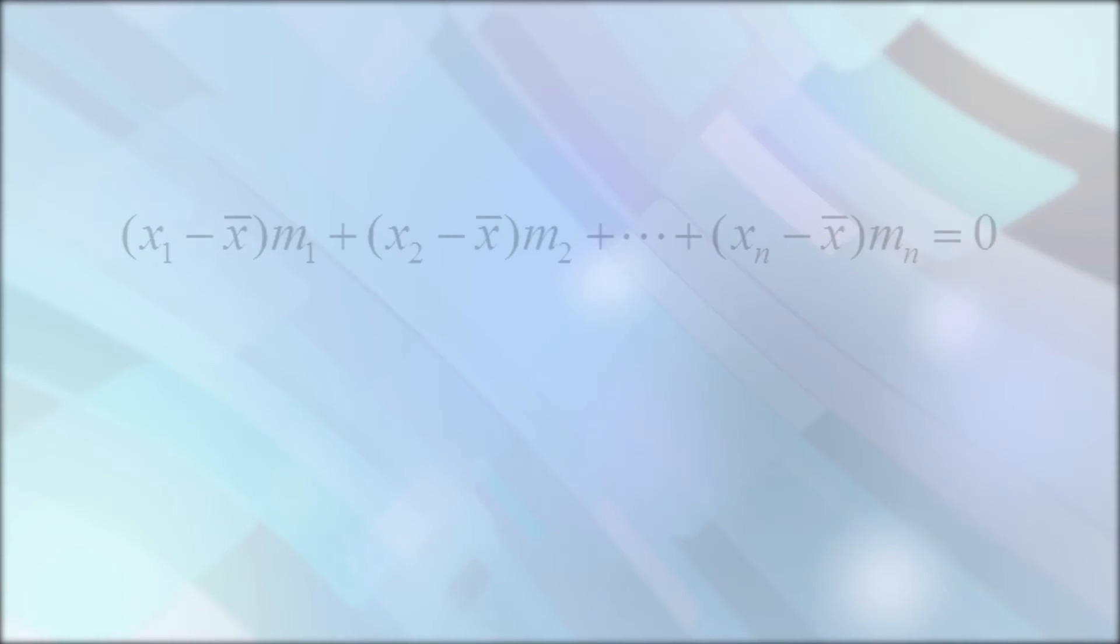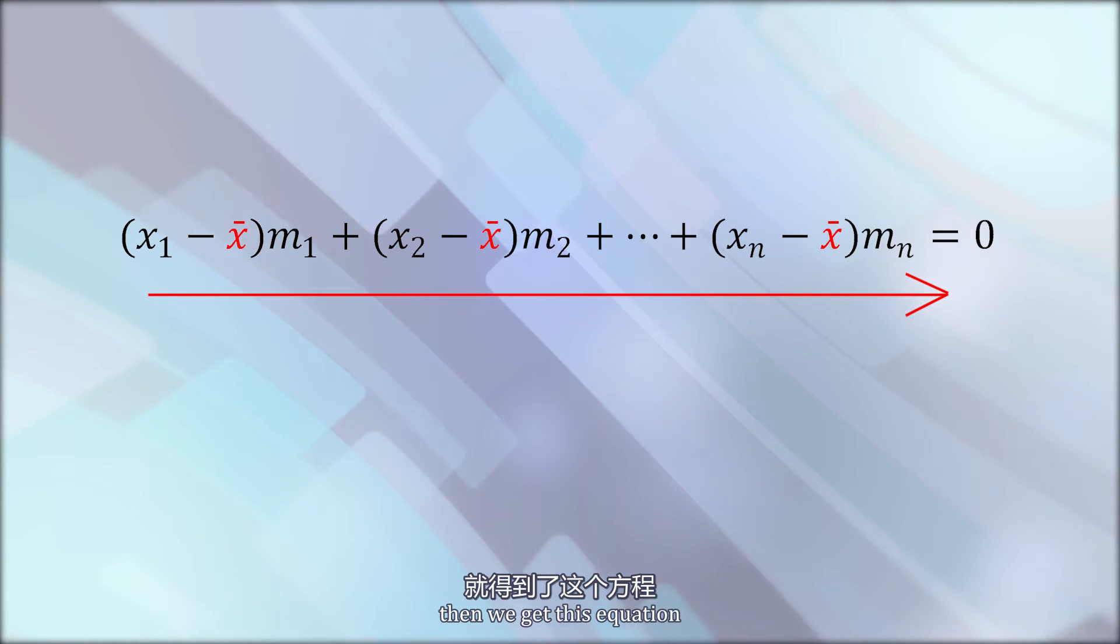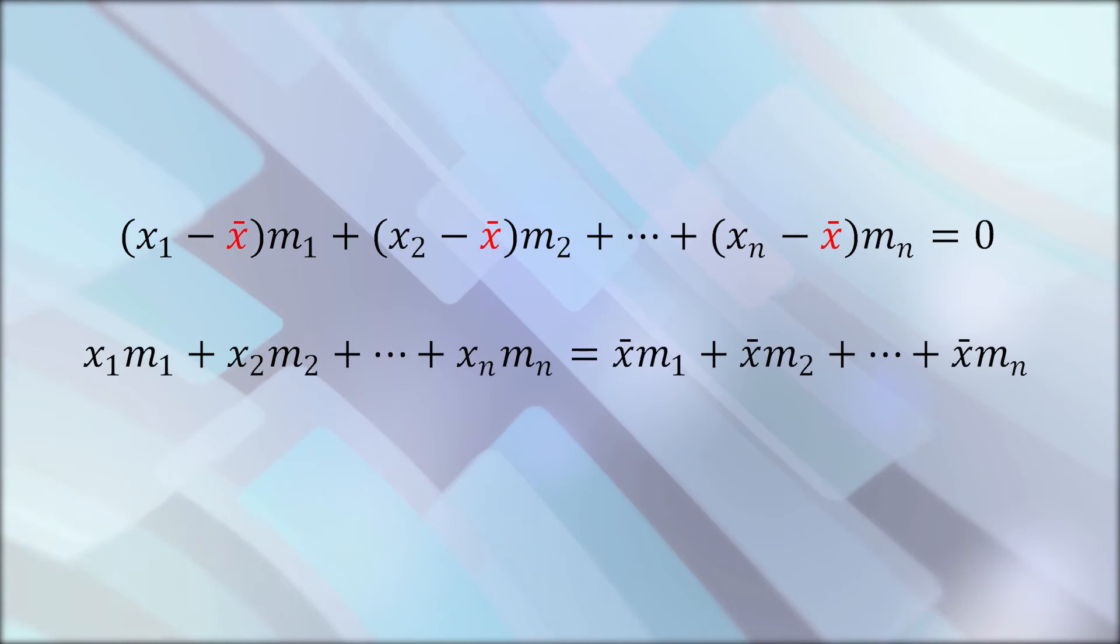That is, (x1 minus x-bar) times M1 plus (x2 minus x-bar) times M2, and so on, the total sum is zero. Or, to simplify it, if we move x-bar terms to the right, then we get this equation. That is, x1 M1 plus x2 M2, and so on, to xn Mn equals x-bar M1 plus x-bar M2, and so on.